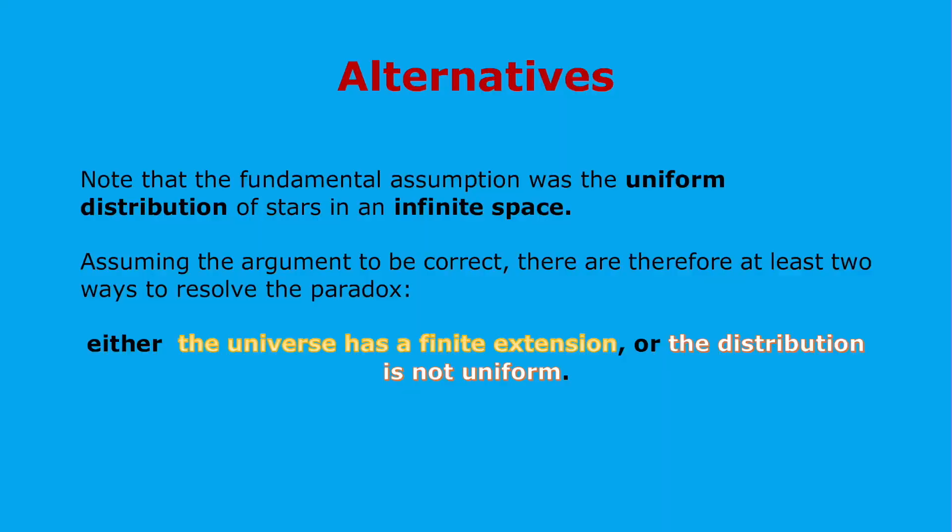Note that the fundamental assumption was the uniform distribution of stars in an infinite space. Assuming the argument to be correct, there are therefore at least two ways to resolve the paradox: either the universe has a finite spatial extension, or the distribution is not uniform.